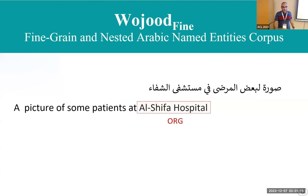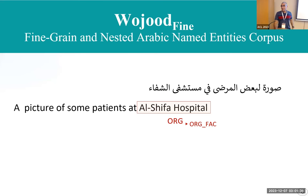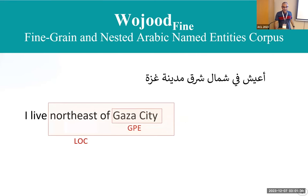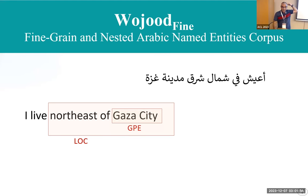Another example: 'a picture of some patients at Al-Shifa Hospital.' Al-Shifa Hospital is an organization, or you can call it a facility — but here we classify it as a facility of the organization. Another example: 'I live northeast of Gaza City.' Gaza City itself is a GPE, and 'northeast of Gaza City' is a location. Together they are nested. With Wujud Fine, we say Gaza City is a town and the directional reference is a region general.